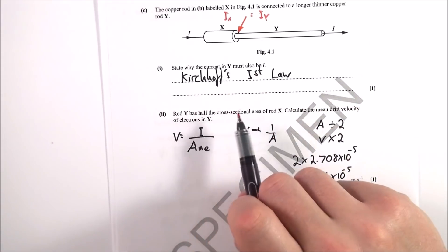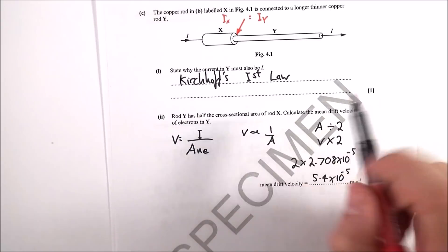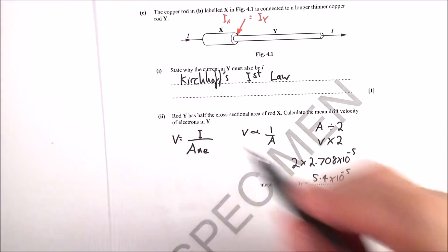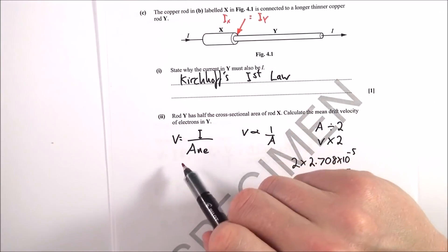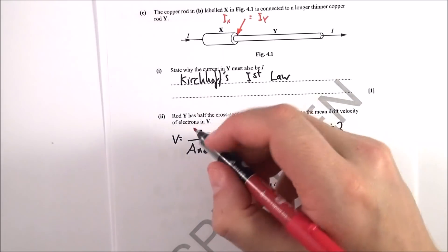Next, the next one here. Rod Y has half the cross-sectional area. Calculate the mean drift velocity of electrons in Y. Well, we know that V equals I over A-N-E, and if you've got the same